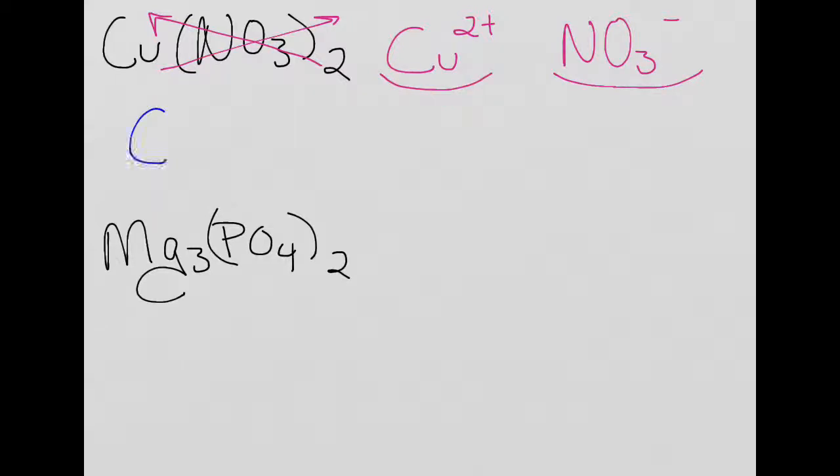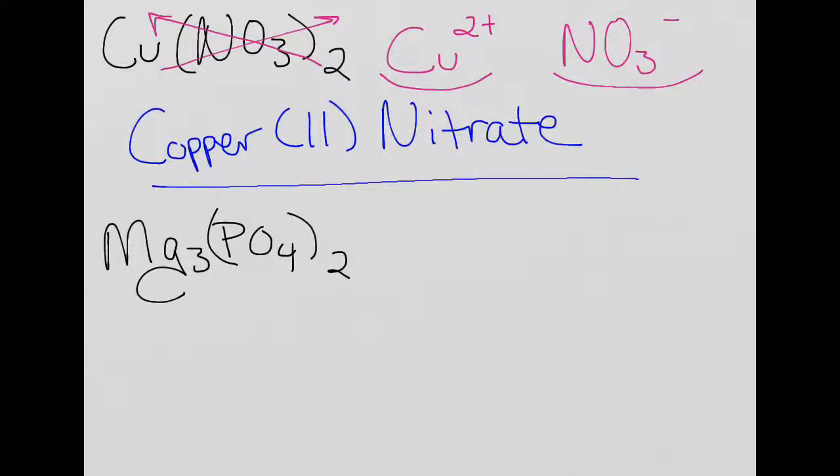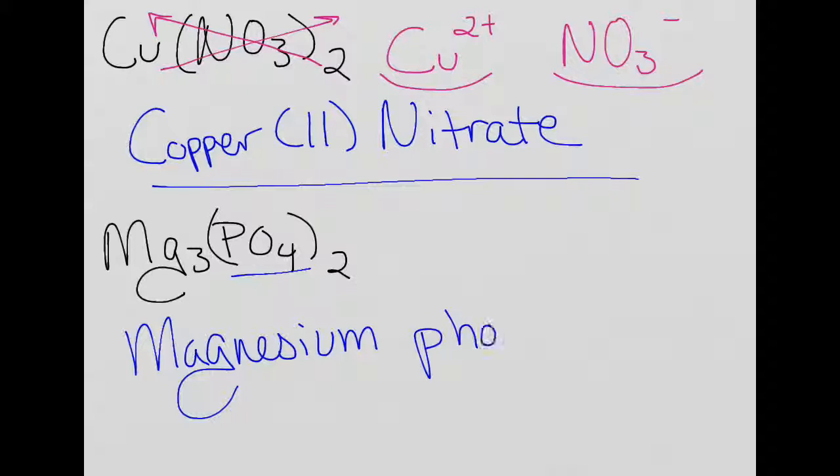Copper-2-nitrate, that's the name of that polyatomic ion. Here again, what's my positive? My positive is magnesium. And I can see that PO4 is going to be phosphate, so this will be magnesium phosphate. Again, totally not caring about any of these numbers at all.